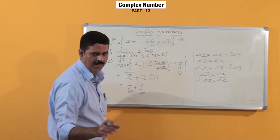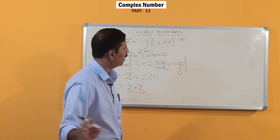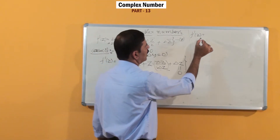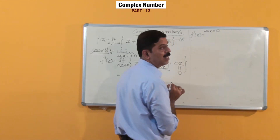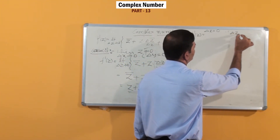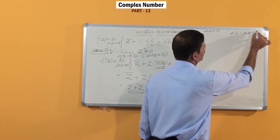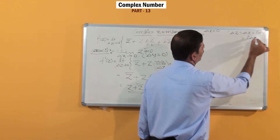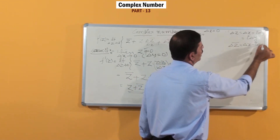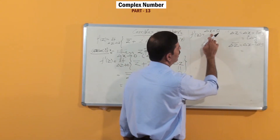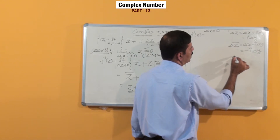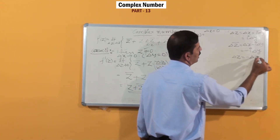Similarly, on the other hand, we observe the limit through the imaginary axis. When f'(z) is found by tending through the imaginary axis, the real part of Δz is 0, meaning Δx = 0. Therefore Δz = 0 + iΔy = iΔy. Similarly, Δz̄ = Δx − iΔy = −iΔy. So we can write Δz̄ = −Δz.